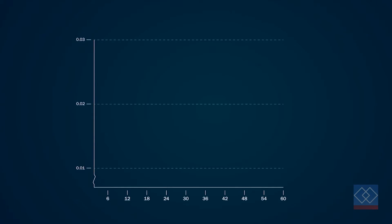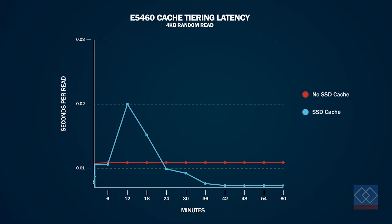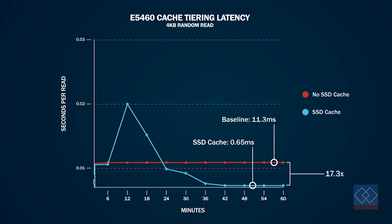Using the E5460 Storage Array with hard disk drives and an SSD cache, we ran a similar synthetic benchmark test. We ran the test without using the SSD cache to establish a baseline, and then repeated the test with the SSD cache enabled. As the SSD cache warmed up, the performance dramatically improved in terms of IOPS and bandwidth, while the latency dropped by a factor of 17.